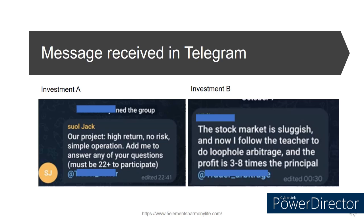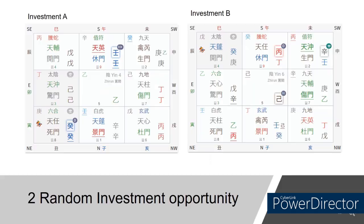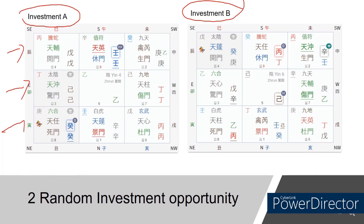Recently, I received two investments that were shared in my Telegram channel E7 Korea, and I decided to cast a Chiemen chart to check on these two investments. These are the two forecasting charts which I have plotted for investment A and investment B. The Chiemen forecasting chart is divided into nine squares — three by three — and this is called one palace. Each of these palaces will give information about the direction and their own element.